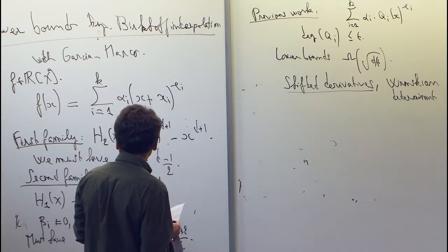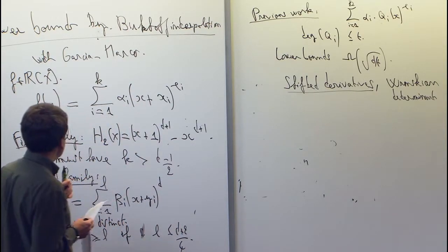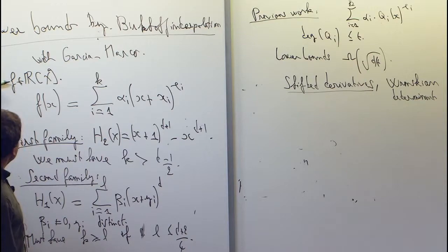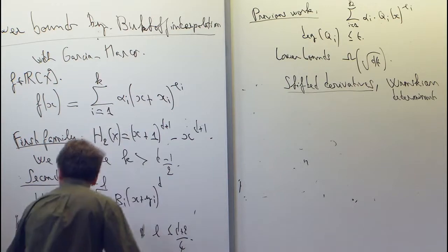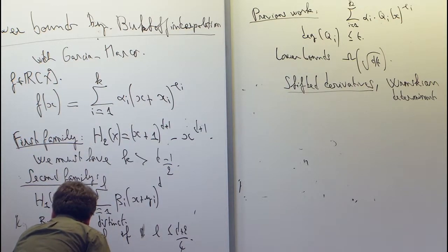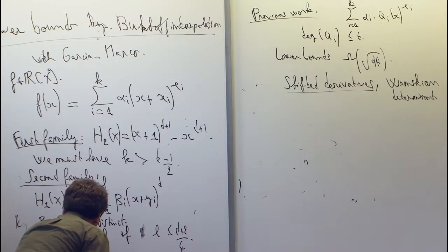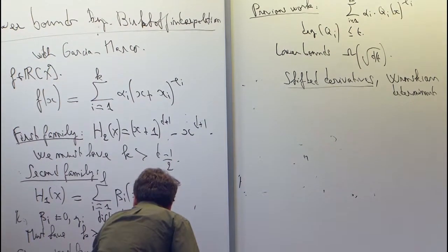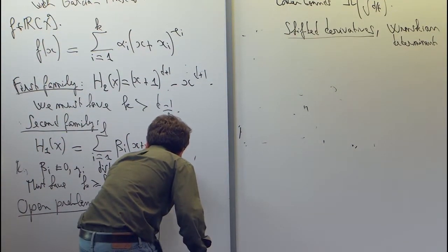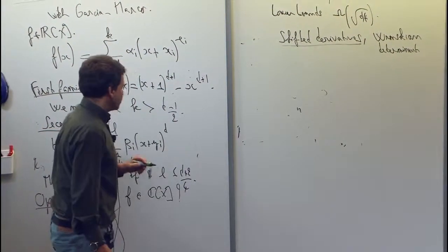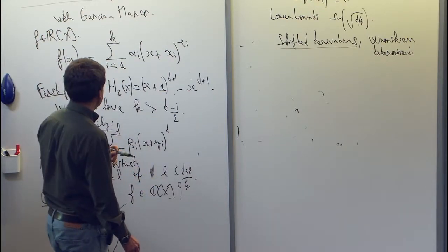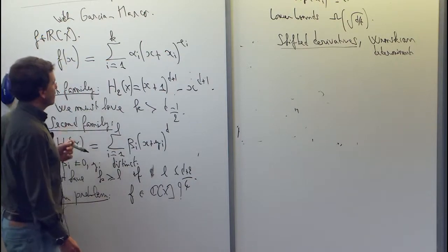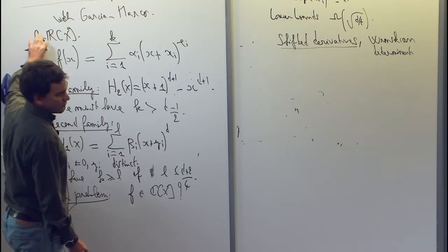And I should mention that it's very important here that f is a real polynomial. So as an open problem, I could mention there are many open problems, but I could try to extend this to complex polynomials. Try to find a linear lower bound for complex polynomials. The proof that we have really uses the fact that we have real polynomials.